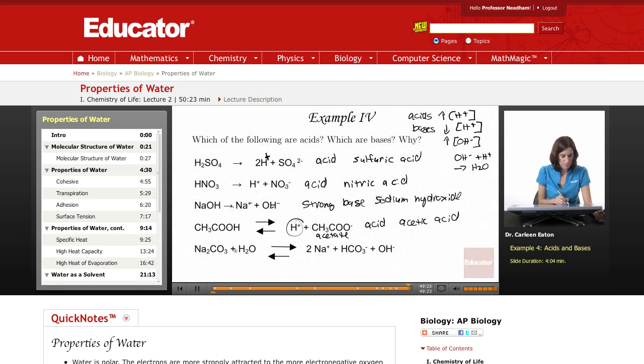Finally, Na2CO3 plus water dissociates to form two sodium ions, plus this is bicarbonate and hydroxide. So I can see with this increase in the hydroxide, what I have is a base. This is sodium bicarbonate, which is a weak base. It dissociates to form sodium, bicarbonate, and hydroxide.